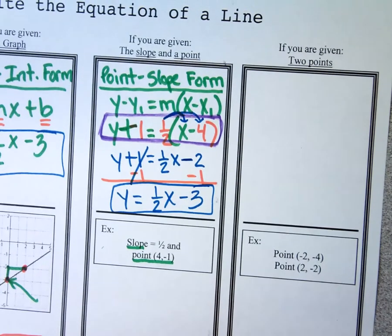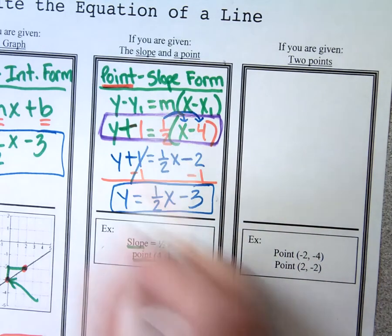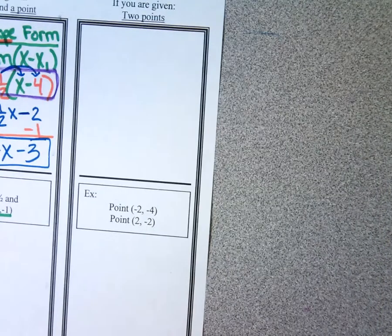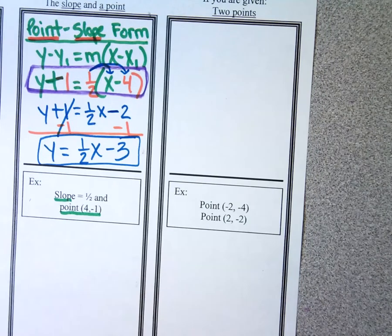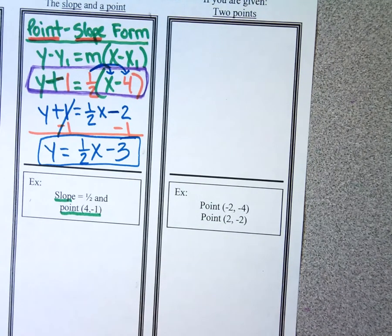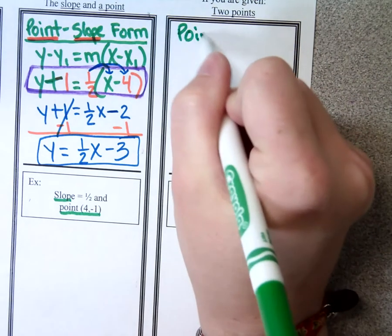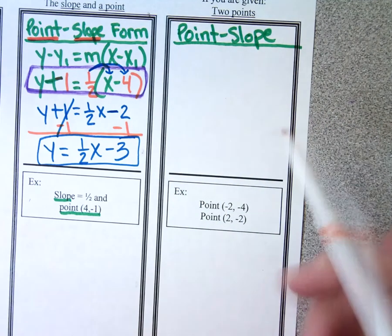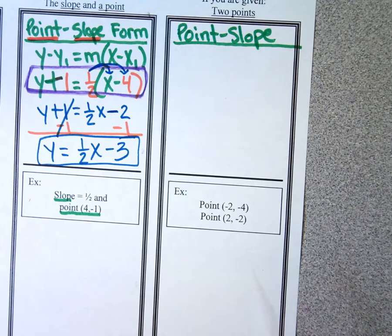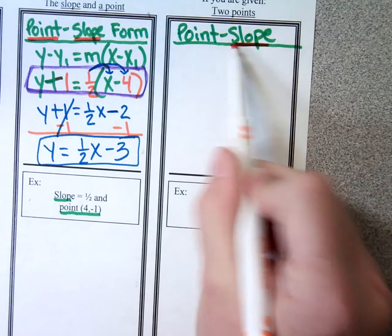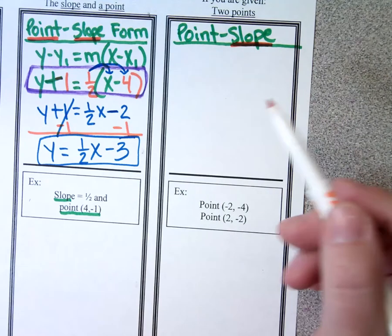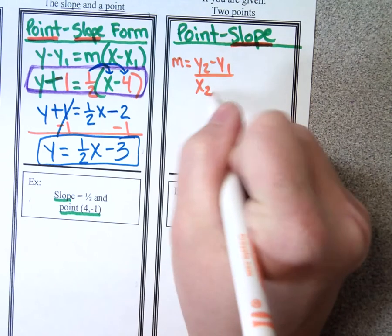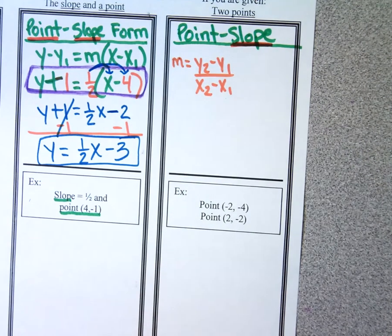If it says put it in point-slope form, stop there. If you want slope-intercept form, distribute and then get y by itself. Point-slope form is what I use any time I'm given a point. This next one gives me two points. Since I'm given a point, I need to start with point-slope form. But do I have a point and a slope? No — all I have are points, so I need to find the slope first using y2 minus y1 over x2 minus x1.